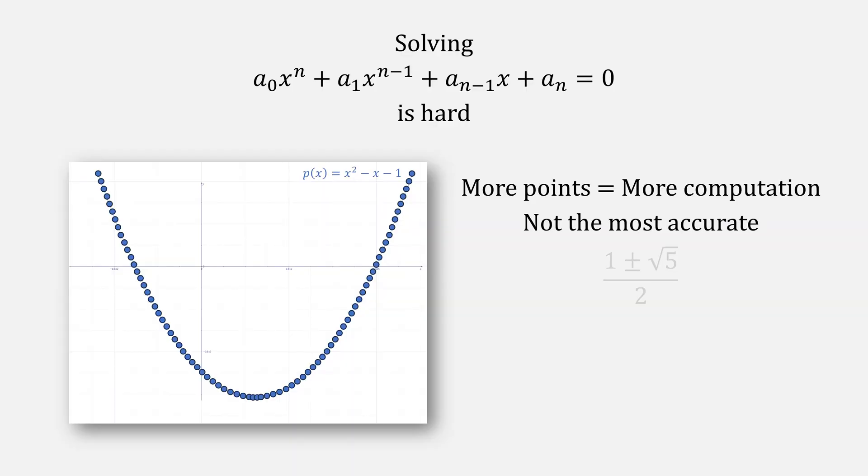And it's also not the most accurate. For example, this has roots at 1 plus the square root of 5 over 2. And finding that on a graph is difficult.